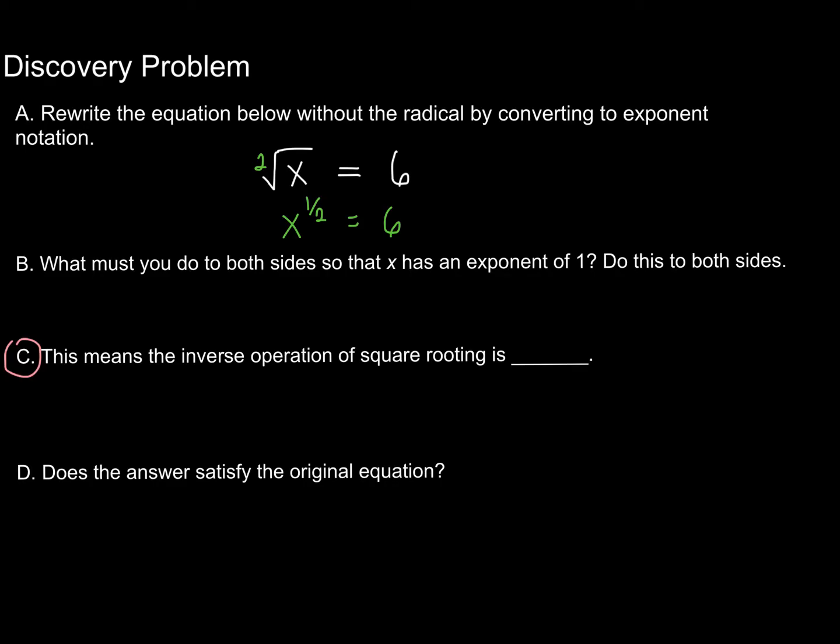And that means that we have x to the 1 half is equal to 6. So when I think about what I have to do to both sides so that I now have an exponent of 1, in other words, so that I have solved for x, I need to somehow multiply 1 half by 2. And I can do that if I simply raise each side to the power of 2. In other words, if I square both sides.